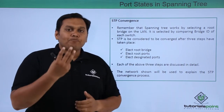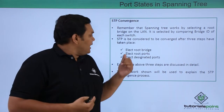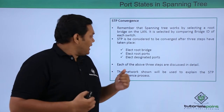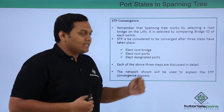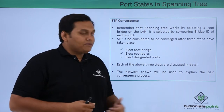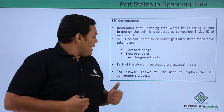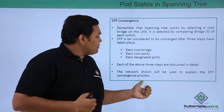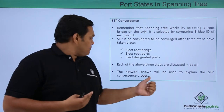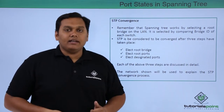What are the three steps? The three steps are: electing the root bridge, electing root ports, and electing designated ports. Each of these three steps is discussed in detail, and the network diagram shown will be used to explain the STP convergence process clearly.